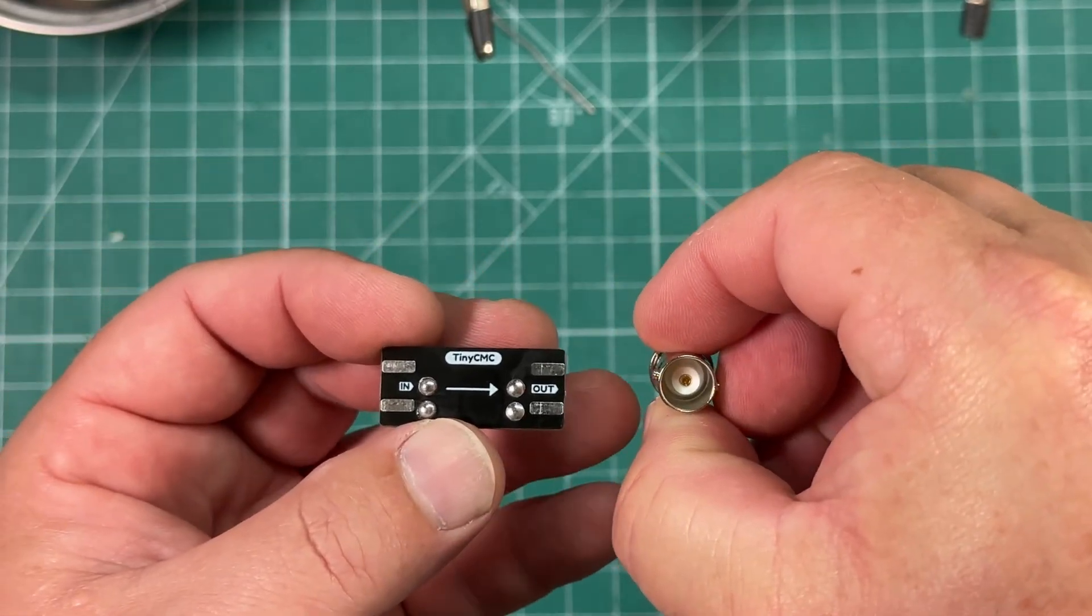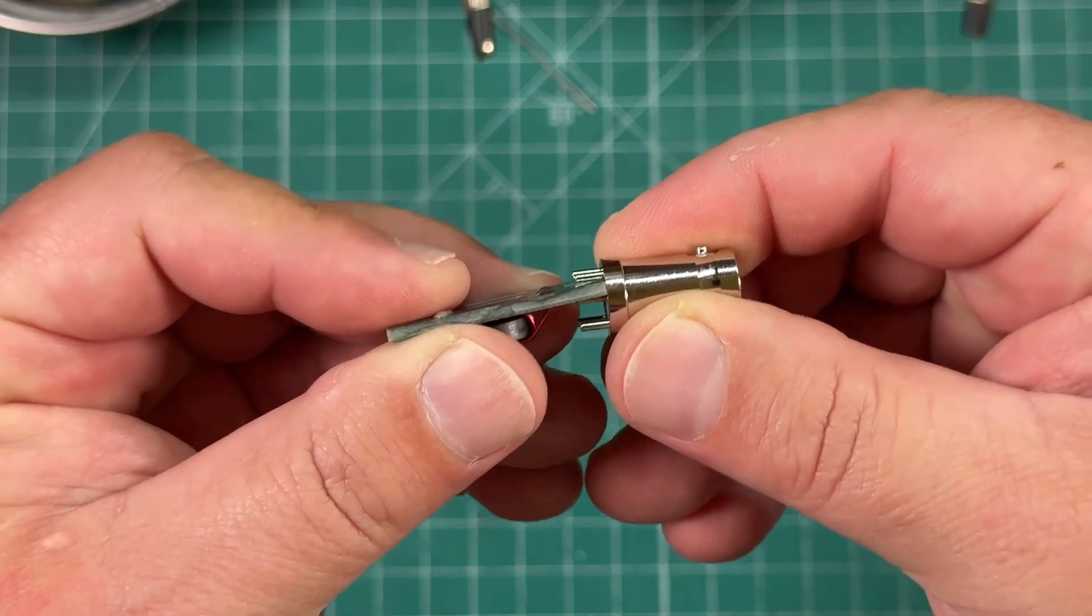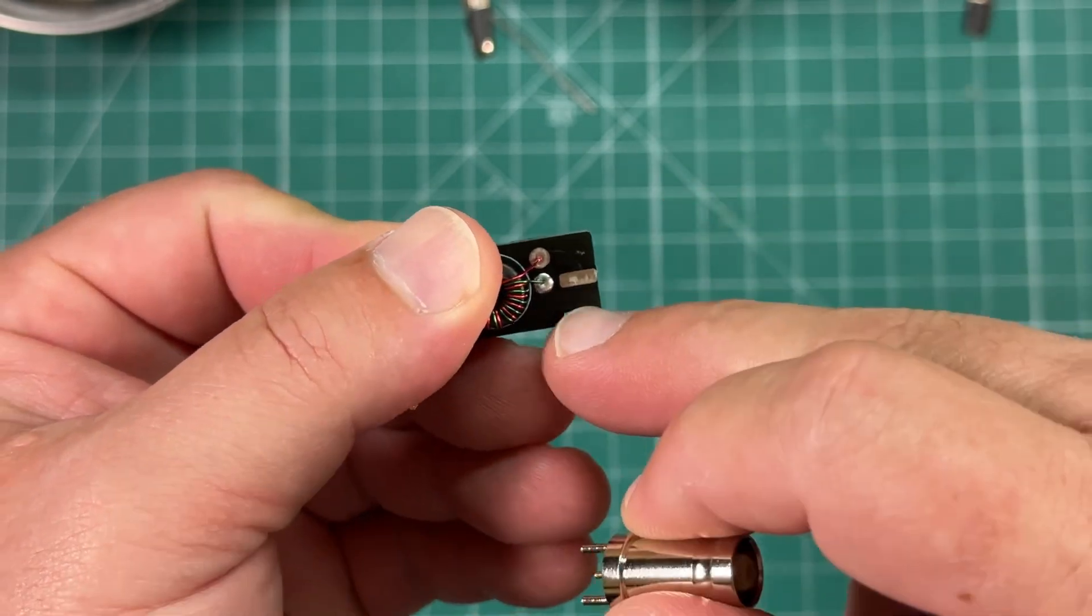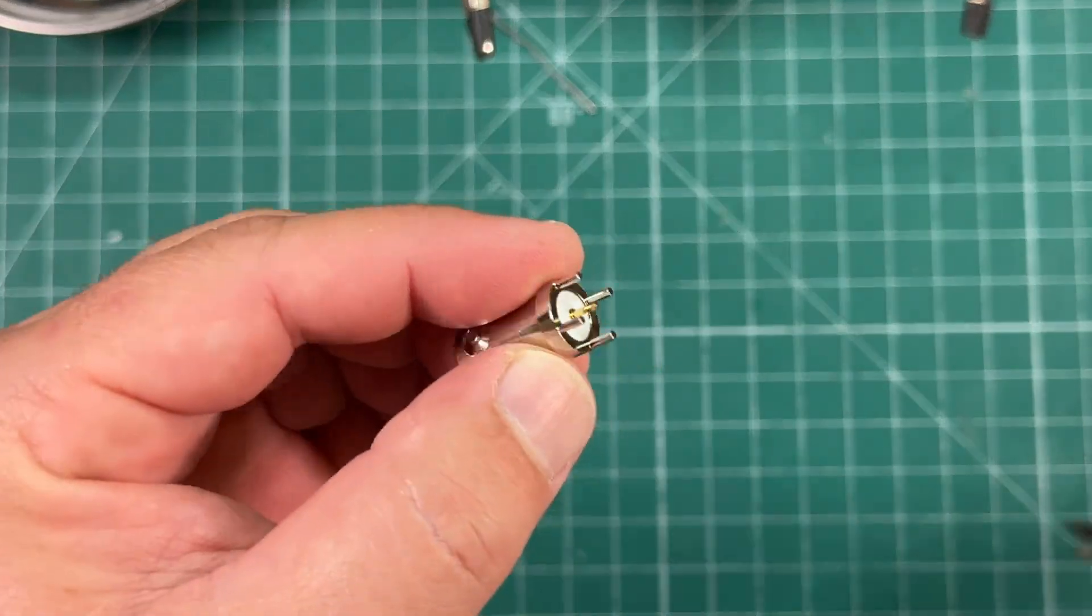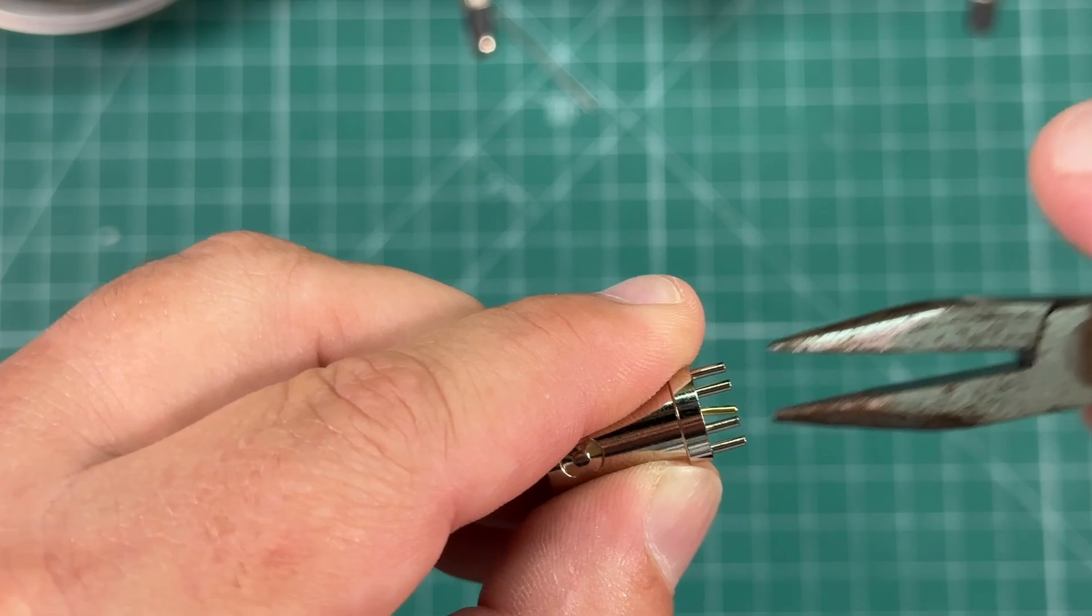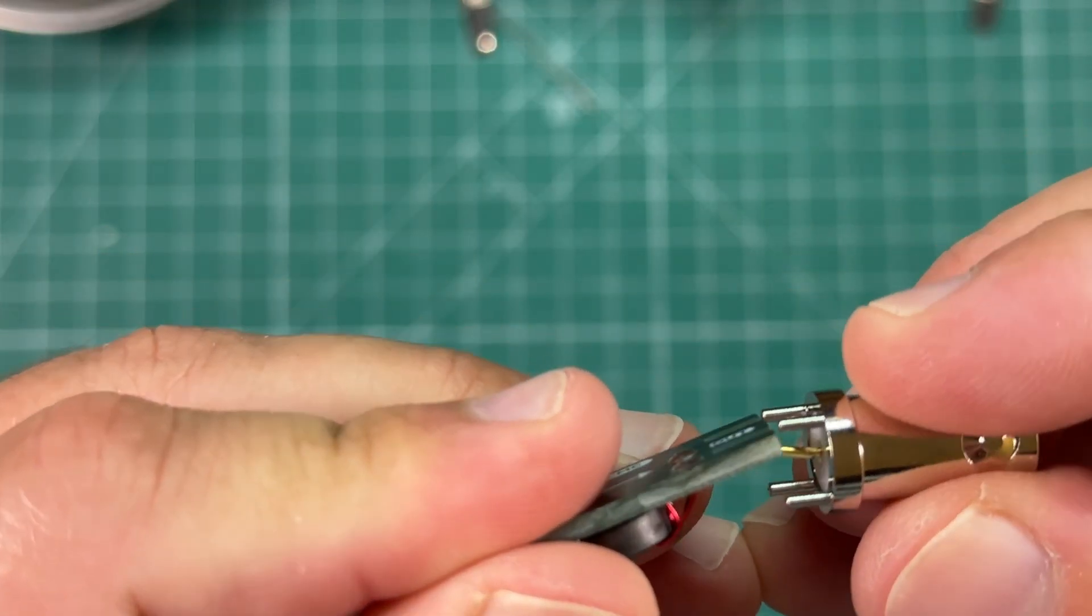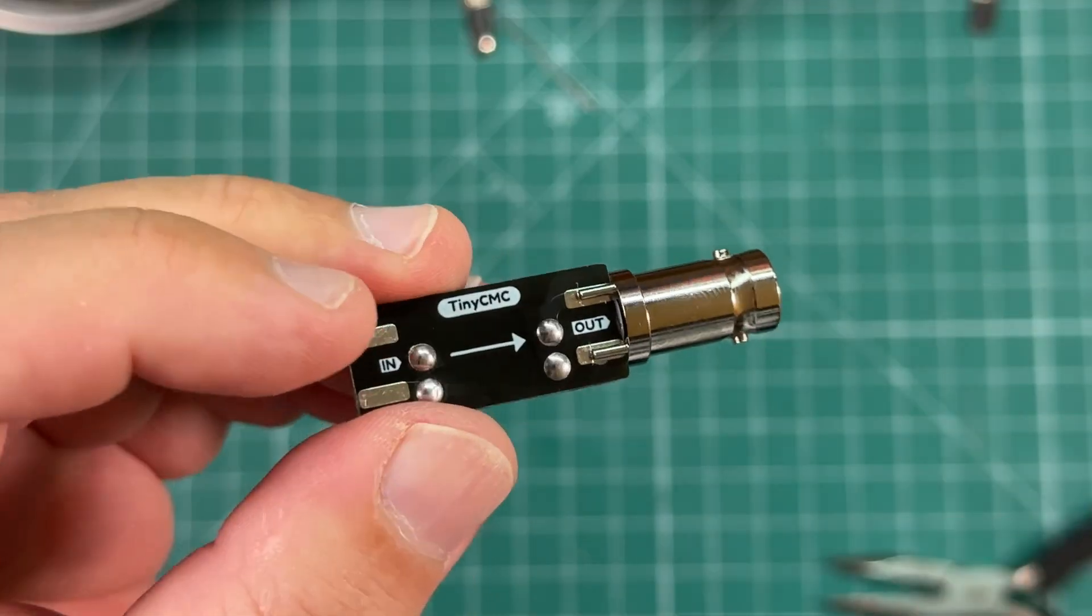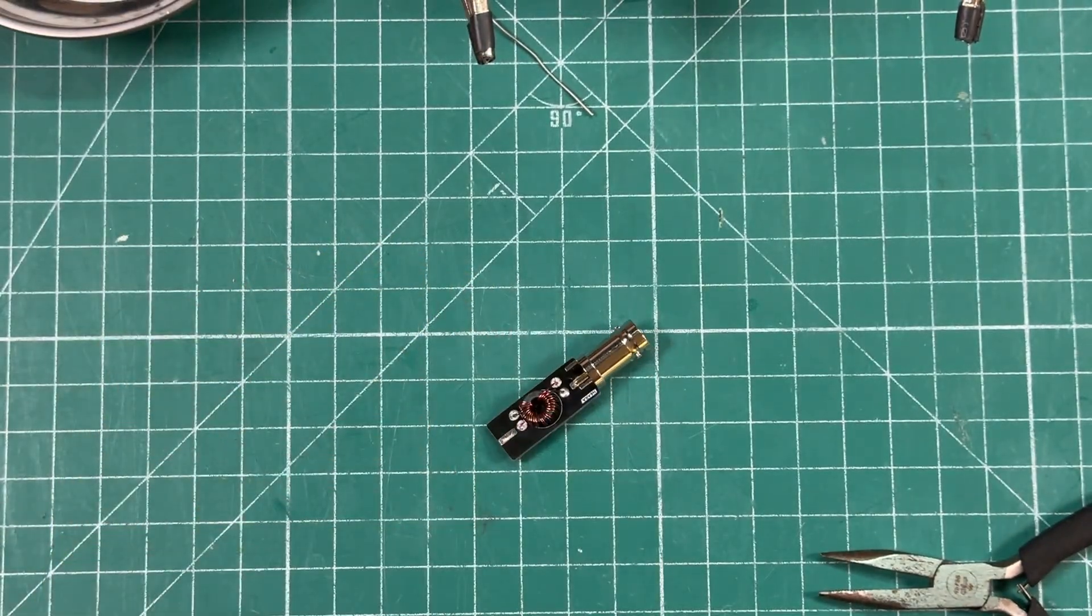Next, we're going to fit the BNC female to the side that says out. But we need to bend the center connector in just a little bit so it will have kind of a friction fit on the PCB. We'll just take some needle nose pliers here. See how we've got a nice friction fit on there. It's not coming off. That is what we want.